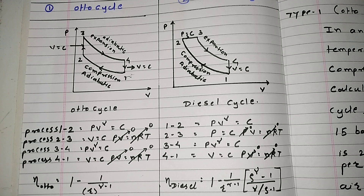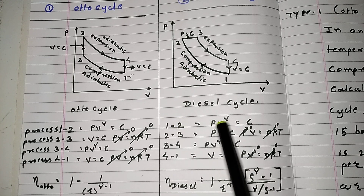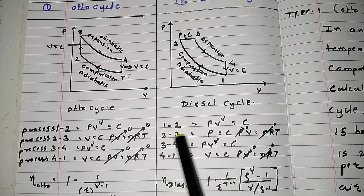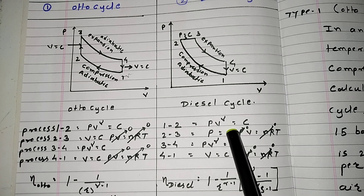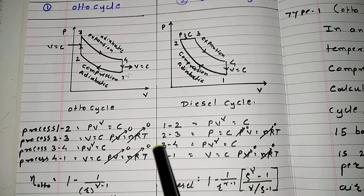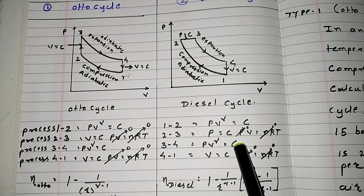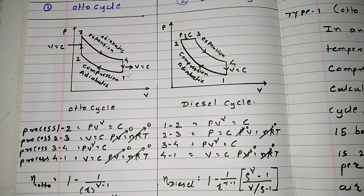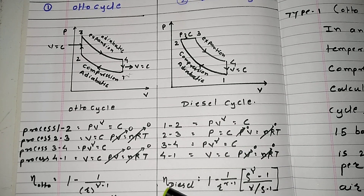In the diesel cycle, the first process is the same adiabatic compression, so PV raised to gamma equals constant. But in process 2 to 3, pressure is constant, so instead of volume, pressure becomes zero and V is proportional to T. Process 3 to 4 is again adiabatic expansion: PV raised to gamma equals constant. Process 4 to 1 volume is constant.